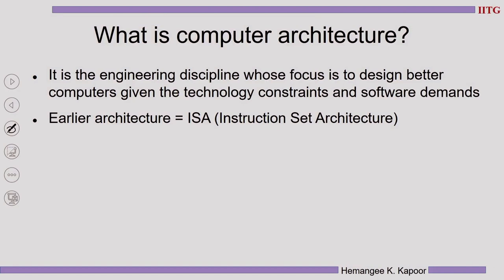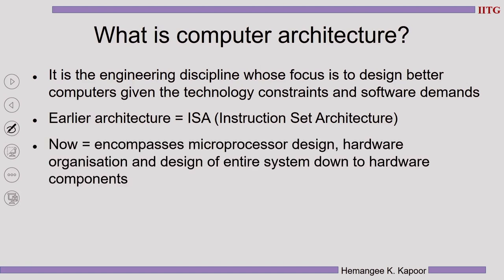In earlier days, computer architecture was limited to only ISA — Instruction Set Architecture. It concentrated on what type of instructions should be designed, how complex or simple they should be, and what type of operations they should support. Each vendor was concentrating on their own ISA development, and with this ISA came a series of softwares which supported those ISAs and ran on machines developed for those particular ISAs. Any advancement in designs was about how better the new version of ISA was compared to older versions.